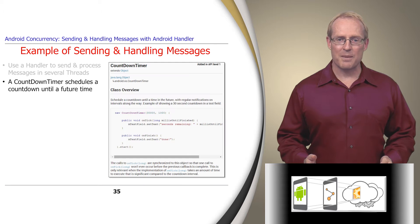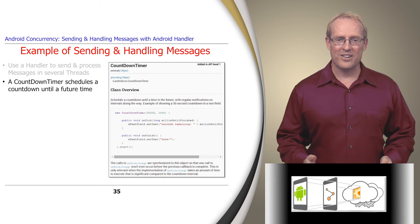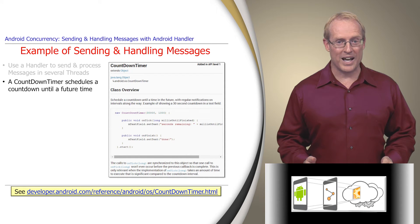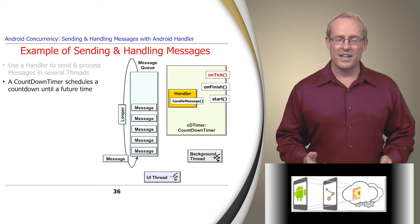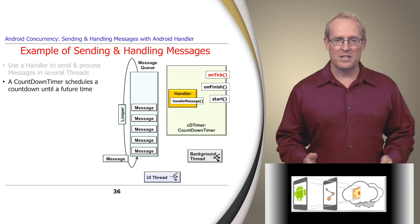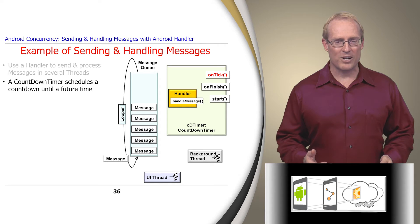This example is based on the Android countdown timer class, which schedules a countdown until a specified time in the future, as described at this link. A countdown timer's onTick hook method is dispatched at regular intervals via internal calls to the sendMessageDelayed method until its countdown time period elapses.